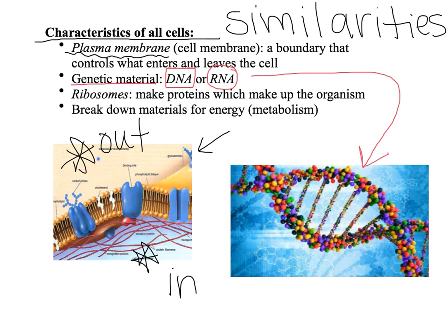Another thing all cells have in common are ribosomes. Ribosomes are a specialized structure within the cell with a very specific job: to make proteins. Proteins are going to decide what an organism is all about — for example, your eye color is determined by proteins made by DNA in your ribosomes. And then the last thing all cells do is break down materials for energy, which we call metabolism. When you eat food, you break it down and go through metabolism to get energy, and all cells do the exact same thing.